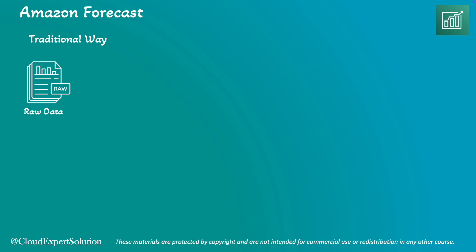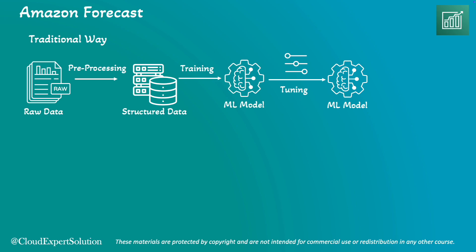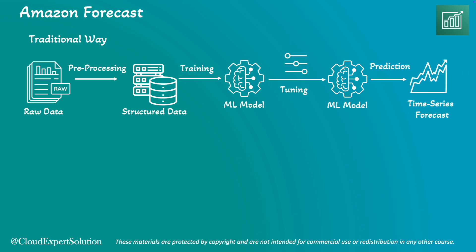When you are using traditional machine learning services, the process begins with raw data. First, we perform data processing, which includes cleaning the data and using an ETL process to transform it into a structured format. Next, we select an appropriate machine learning model and proceed to train it. After training, we conduct hyperparameter tuning to optimize the model and achieve the desired level of accuracy. Finally, the trained and tuned machine learning model generates predictions based on the business data.